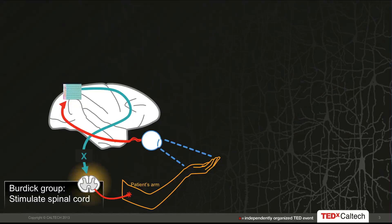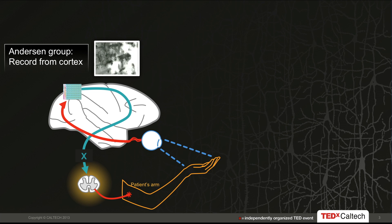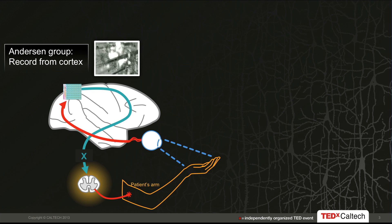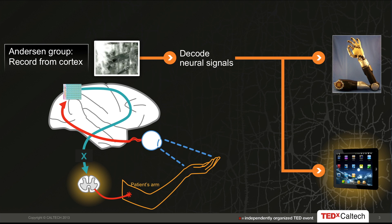Joel will be talking about stimulating the spinal cord for recovery, and I'll be talking about recording from groups of neurons in the cortex. We put in an array of electrodes, indicated by this animation, and we record from on the order of about a hundred neurons simultaneously. We then decode the information in that population of neurons and use it either to operate a robotic limb or a computer tablet.